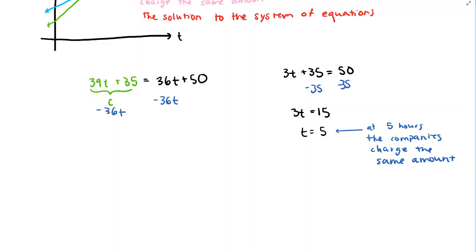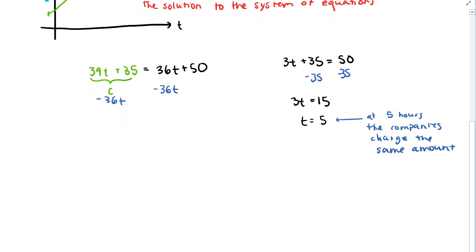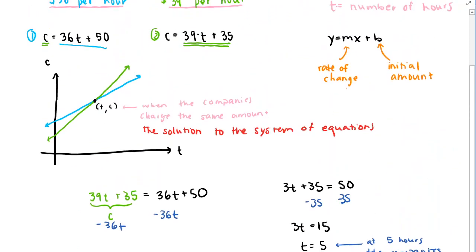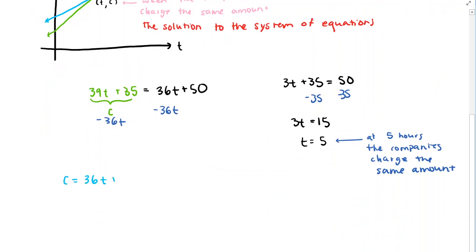The next part asks: how much time would it take for a plumber from the first company to work on a sink if the bill came out to $100? The equation for the first company's cost is C = 36T + 50. We replace C with $100 and solve for the unknown time T.